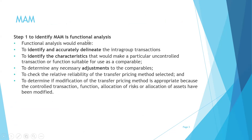An important step for identification of the most appropriate method is the functional analysis. Briefly, the functional analysis identifies and accurately delineates the intra-group transaction. It identifies the characteristics of a particular international transaction, helps determine whatever necessary adjustments would be required to the comparables, and helps check the relative reliability of the transfer pricing method selected.